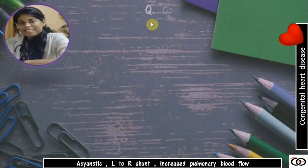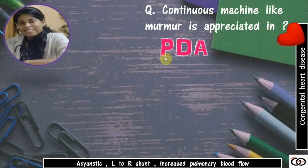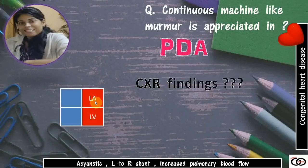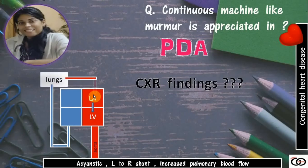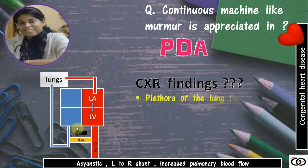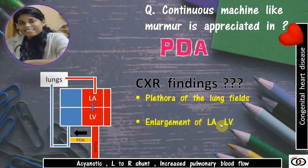Continuous machine-like murmur is heard in PDA, patent ductus arteriosus. Blood goes from the left atrium to the left ventricle and then to the aorta, and on the right side through the pulmonary artery to the lungs and back to the left atrium. If the ductus arteriosus is patent, it connects the aorta with the pulmonary artery, and blood flows from the aorta to the pulmonary artery and then to the lungs. So we find plethora of the lung fields as they receive extra blood. This extra blood goes to the left atrium and left ventricle, so they enlarge. This completes the first category of acyanotic heart disease with left-to-right shunt causing pulmonary plethora.